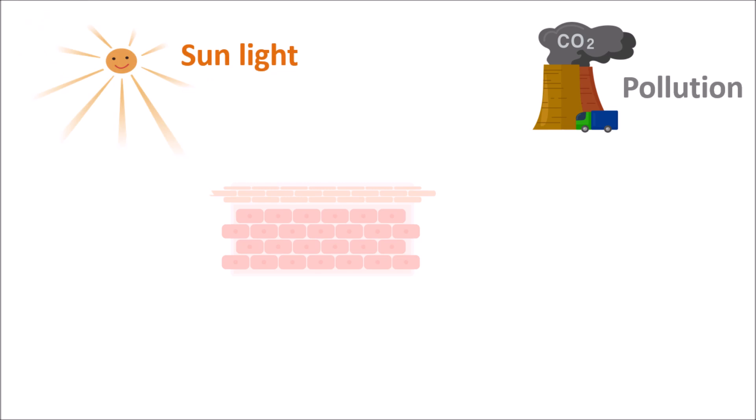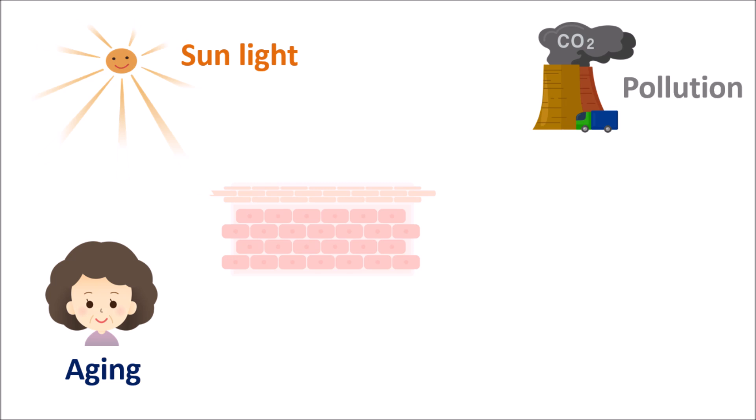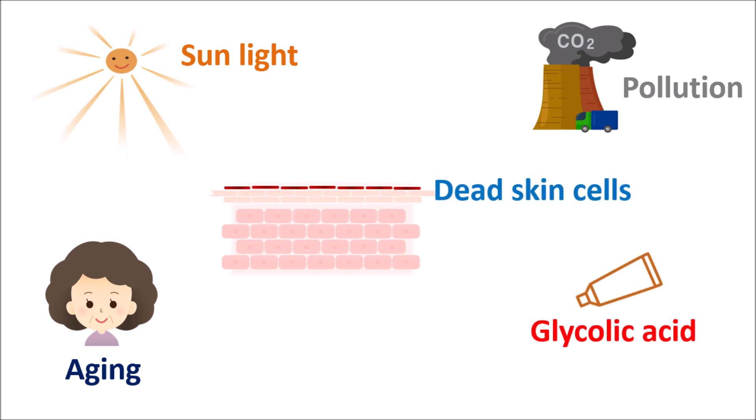Normal skin can accumulate dead cells due to exposure to various factors — pollution, direct contact with sun rays, particularly UV radiation, or due to aging. Any of these factors can produce modification of skin structure leading to dead skin cells. Glycolic acid, as an exfoliating agent, acts on the dead skin cells, producing skin exfoliation, removing dead cells, and accelerating new cell formation. This reduces aging effects as well as darkening of the skin.